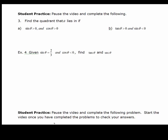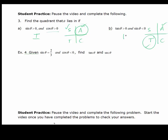Pause the video and try practice problem three, then start the video to check your work. For part A: sine is greater than zero — sine is positive in the first and second quadrants. Of those two, cosine is positive in the first. So this is the first quadrant. For part B: tangent is positive in the first and third quadrants, and sine is negative in the third. So this would be the third quadrant.